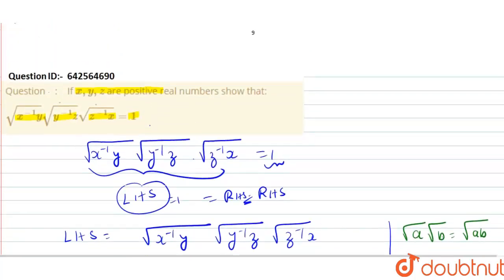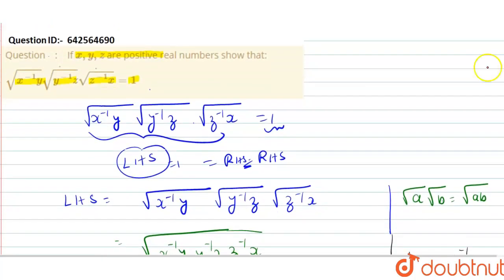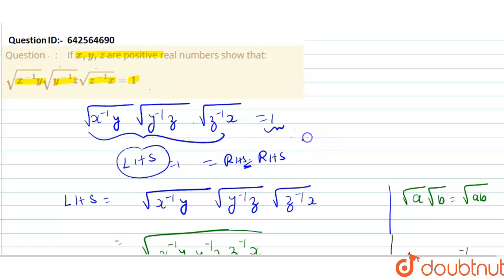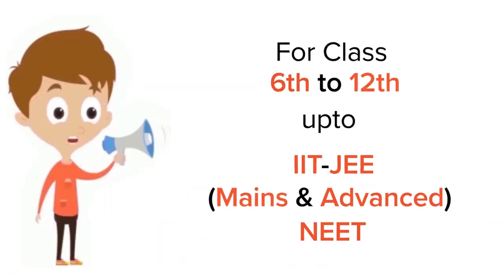I hope that I have cleared your doubt. The result proved is that root of x raised to minus 1 into y, into root of y raised to minus 1 into z, into root of z raised to minus 1 into x equals 1. Thank you very much.